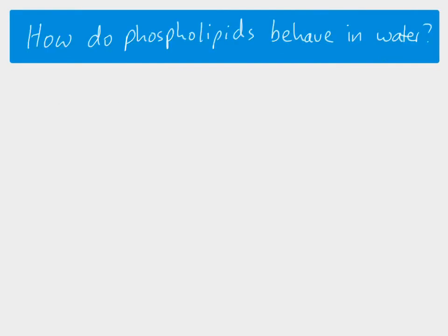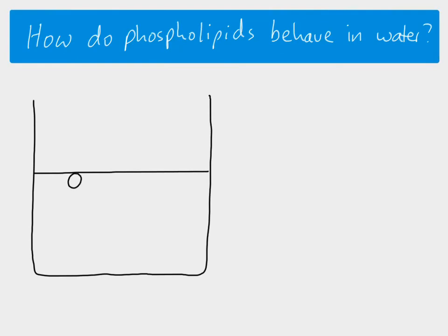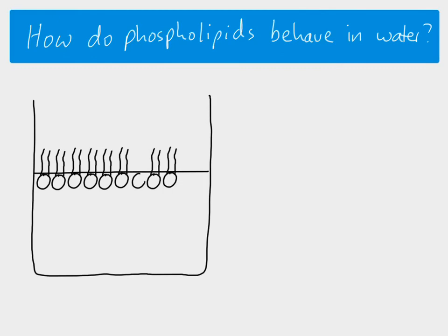Before we look at the structure of phospholipids, we're thinking big picture and want to know what happens if we put phospholipids in water. There is probably a clue in the fact that phospholipids have got the word 'lipid' in them — this might be similar to what happens with oil. So if we take our beaker, you can see phospholipids will arrange themselves on the surface of the water.